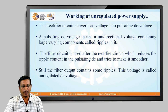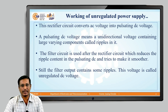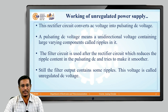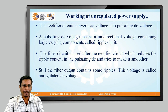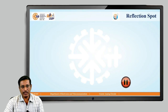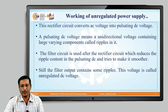To minimize these AC components, a filter circuit is used that greatly reduces the AC components present at the output of the rectifier circuit. The pulsating DC voltage from the rectifier is applied to the filter circuit that minimizes AC content to a great level. But still, the output of a filter contains some ripple or AC components.